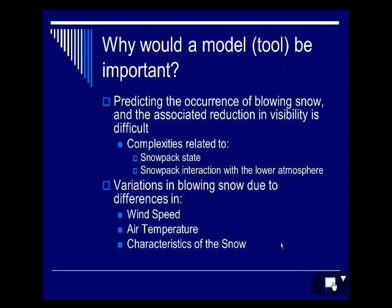Predicting blowing snow has its complexities. Some are related to the state of the snowpack and its interaction with the lower atmosphere. Blowing snow varies spatially and temporally due to differences in wind speed, air temperature, and characteristics of the snow. Trying to figure out what combination of those three factors will be at play can be difficult. We have a pretty good idea when the snow is fluffy and winds are strong and temperatures are cold, but knowing exactly how much visibility will be reduced based on those environmental parameters can be tricky.